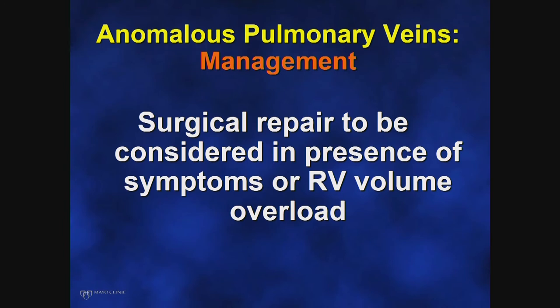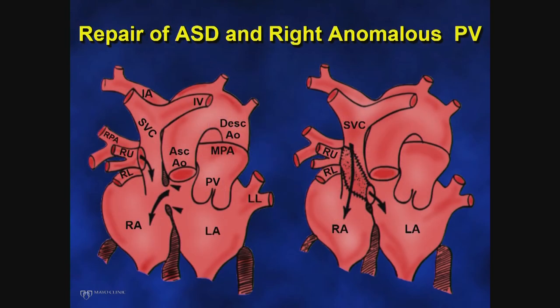Like atrial septal defect, anomalous pulmonary venous connection may require surgical repair whenever there is RV volume overload or in the presence of associated symptoms of exertional dyspnea or fatigue. The presentation in adults — partial anomalous pulmonary venous connection — is similar to that of atrial septal defect. When a patient has both an ASD and anomalous pulmonary venous connection into the SVC, surgeons baffle those anomalous veins into the left atrium through the atrial septal defect, and may need to enlarge the superior vena cava or transect it and connect it to the right atrial appendage. If a patient does not have an ASD, a defect must be created to channel the vein.